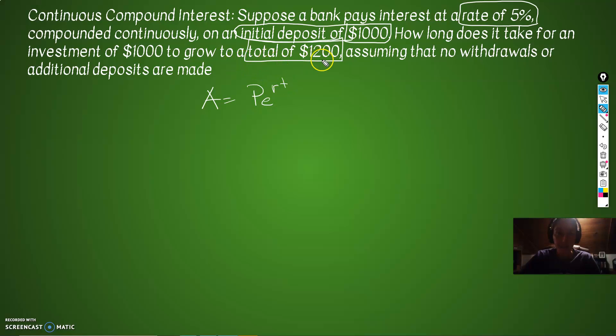So A equals PERT, P to the E to the R to the T. So A, we know the total amount is going to be $1,200 because they told us. We know the initial amount invested is $1,000 because, again, they told us. We know E is E. We know the rate is 5%, which as a decimal is 0.05. And we do not know the T because that's what it's asking. Okay, let's solve this.